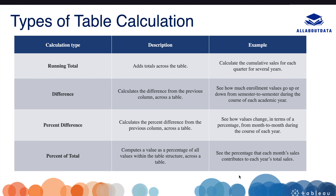Running total basically adds totals across the table — it is also called cumulative sum. For example, suppose you have data for five years. Running total works by adding the sum of year 1 to year 2, then adding the sum of years 1 and 2 to year 3, and so on.